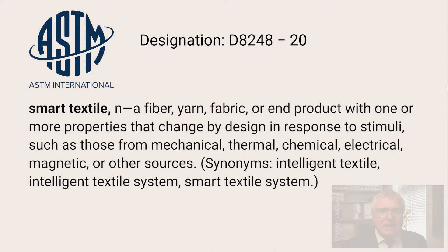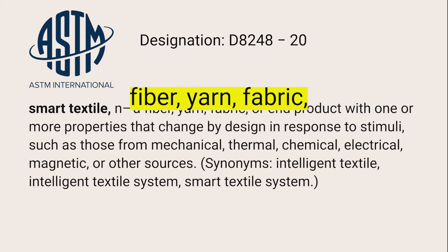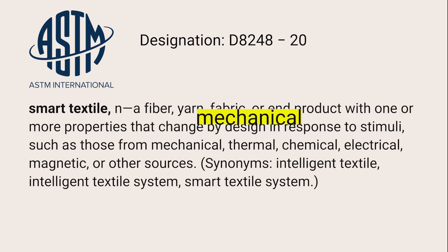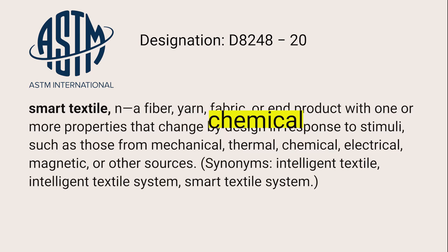Researchers have been using different terminology for Smart Textiles during the years. It is based on the same idea, namely putting intelligent functions known from electronics into textile material. ASTM is the standardization organization that came with the first official definition, and other bodies are expected to follow that standard. ASTM defines Smart Textiles as a fiber, yarn, fabric or end product with properties that change in response to mechanical, thermal, chemical, electrical or other stimuli from the outside.